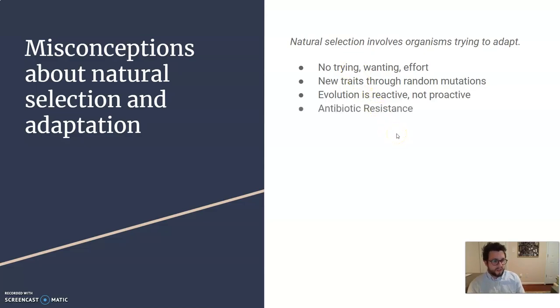Antibiotic resistance is a great example of this. So those mutations in those bacteria occurred randomly. They were already resistant, the ones that survived. And then they multiplied to create new bacteria. The ones that weren't resistant just died.